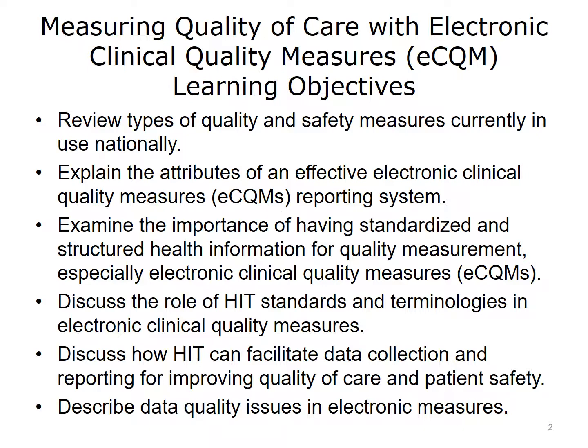The objectives for measuring quality of care with eCQMs are: 1. Understand the various types of quality and safety measures currently in use nationally. 2. Explain the attributes of an effective eCQM reporting system. 3. Examine the importance of having standardized and structured health information for quality measurement, especially eCQMs. 4. Discuss the role of HIT standards and terminologies in electronic clinical quality measures. 5. Discuss how HIT can facilitate data collection and reporting for improving quality of care and patient safety. 6. Describe data quality issues in electronic measures.